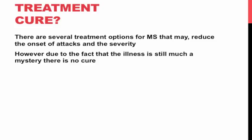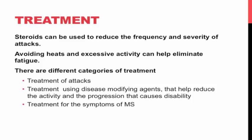There are several treatment options available for MS that may reduce the onset or severity of attacks. However, because the illness remains so much a mystery, there is no cure. Steroids can be used to reduce the frequency and severity of attacks, and avoiding heat and excessive activity can help eliminate fatigue. Treatment categories include: treating attacks with steroids, using disease-modifying agents to reduce activity and progression, and treating individual symptoms — for example, pain is often treated with anticonvulsants or antidepressants, and bladder dysfunction can be treated using fluid restriction or urodynamic testing.